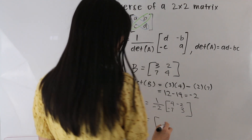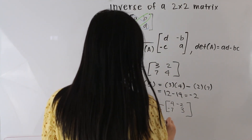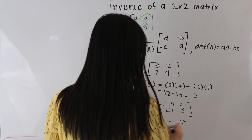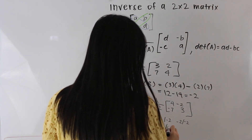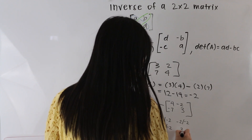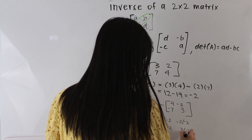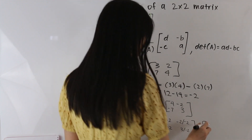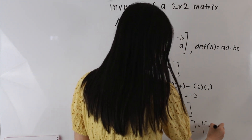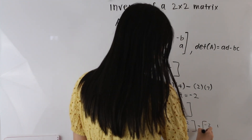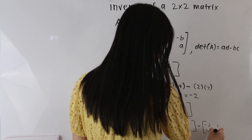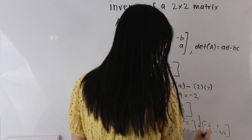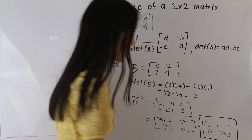Let's go ahead and distribute this negative 1 half into our matrix. So we end up with 4 over negative 2, negative 2 over negative 2, negative 7 over negative 2, and 3 over negative 2. And simplifying this, we end up with negative 2, 1, 7 halves, and negative 3 over 2. And that is our final answer.